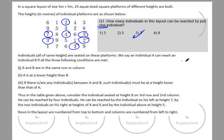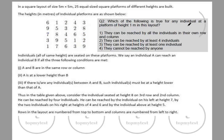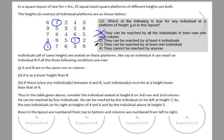Question 2: Which of the following is true for any individual at a platform of height 1? Option: they can be reached by all individuals in their own row and column — definitely false, because to reach height 1 you must be shorter, and nobody is shorter than 1. They can be reached by at least four individuals — false. They can be reached by at least one individual — also false. So option 4 is the correct choice.